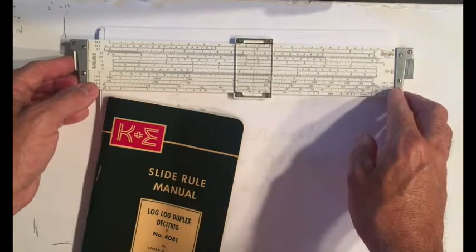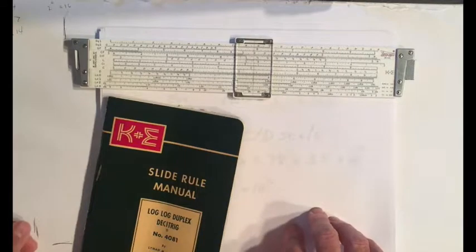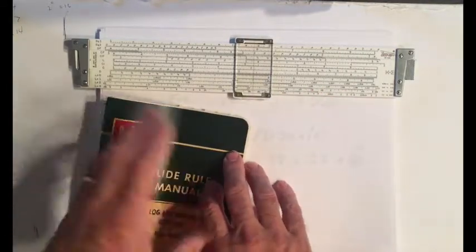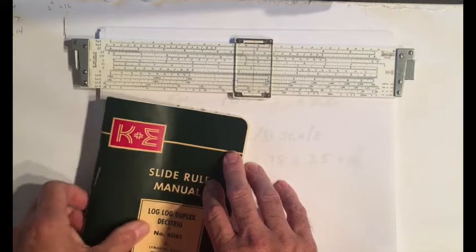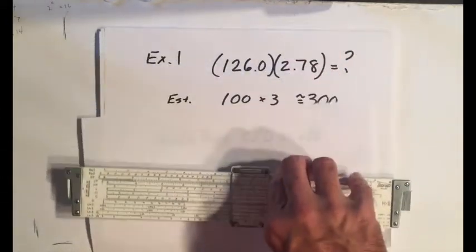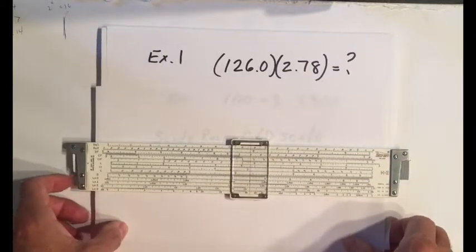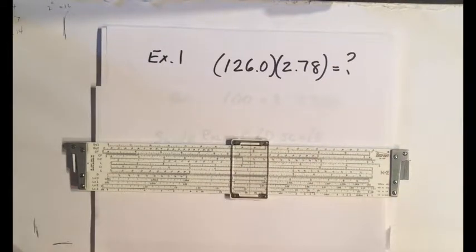I think any scientist or engineer didn't use any of those methods. They used the simple estimation method, just by eyeballing it. You can do that with a simple calculation like this one, 126 times 2.78.